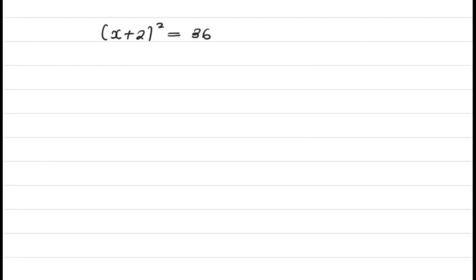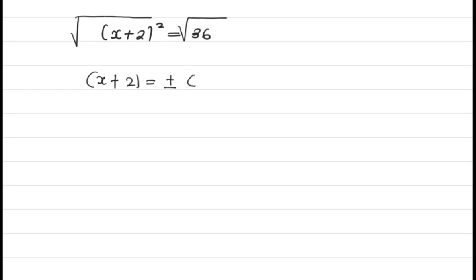This is a very simple question. When they tell you to solve it, the first thing you need to do is introduce a square root on both sides. Then your answer becomes x plus 2 equal to positive or minus the square root of 36, which is 6.